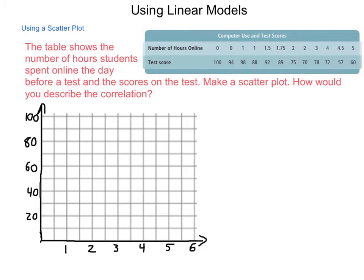First thing we're going to do is we're going to make a scatter plot. And we're going to use this data. The table shows the number of hours students spent online the day before a test, and the scores that they got on that test. First thing we're going to do is make a scatter plot, and then how would we describe the correlation?